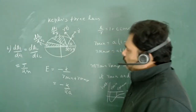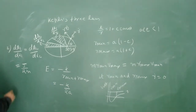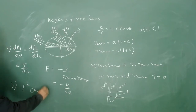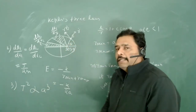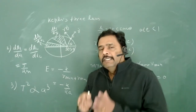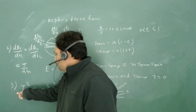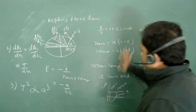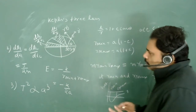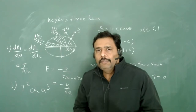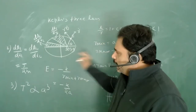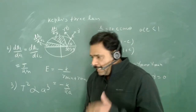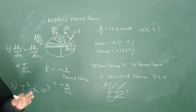Kepler's Third Law states that T² is proportional to a³, where a is the semi-major axis of the orbit. Most exam questions will be based on this concept — sometimes given in terms of angular frequency, sometimes in terms of time period. You should remember all these derivations carefully because understanding the derivation helps you apply the concept correctly.